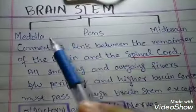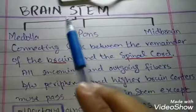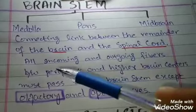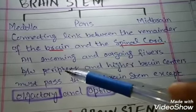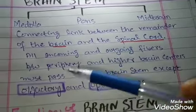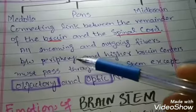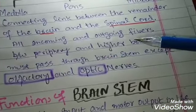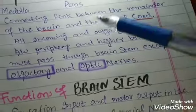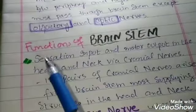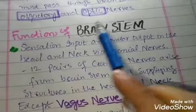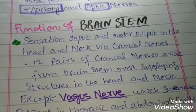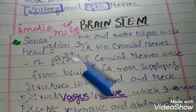To summarize: the brainstem is comprised of medulla, pons, and midbrain, and it is a link between the spinal cord and the higher brain centers. All nerves going between the peripheral nervous system and the higher brain centers have to pass through the brainstem.